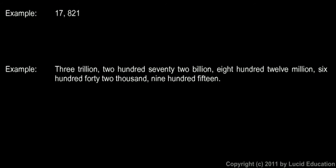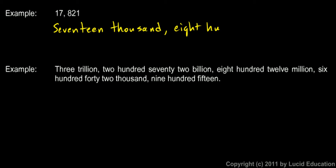Here are two more examples. This number, 17,821 — we want to write that in words. So this is the answer: seventeen thousand, eight hundred twenty-one. We don't use the word 'and.' We name the thousand group. We don't name the ones group — this comes from this digit right there. We don't say '821 ones.' 17,821.